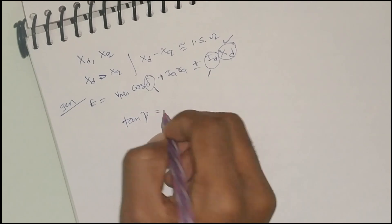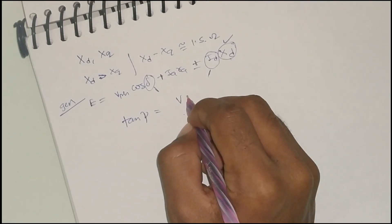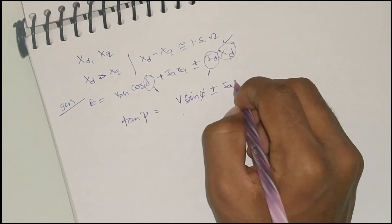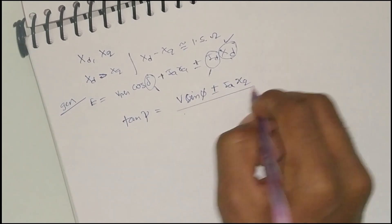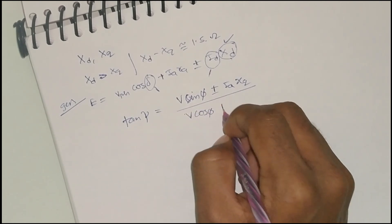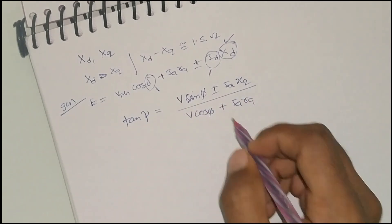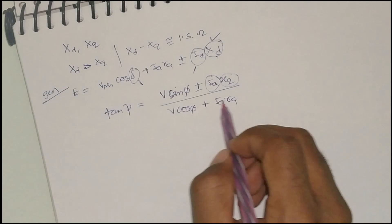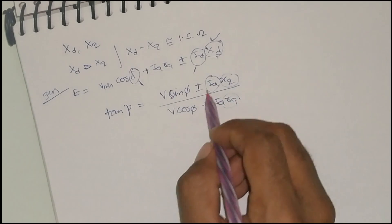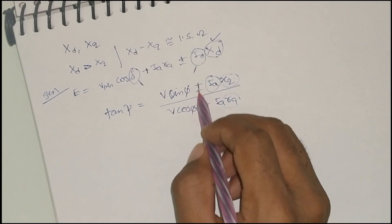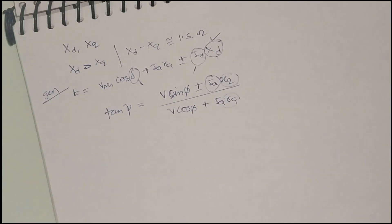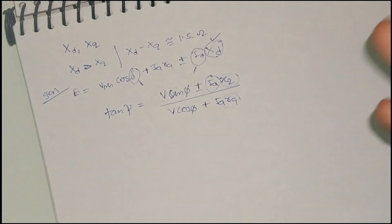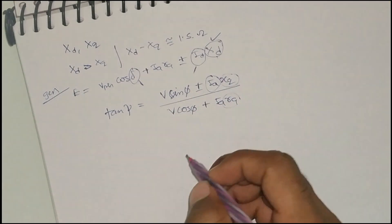To find the unknowns, first calculate tan psi: tan psi equals (V sin phi plus or minus I_a X_q) divided by (V cos phi plus I_a R_a). Remember: for motor take minus, for generator take plus. From this you get the psi value, the internal angle, and from psi you calculate delta.